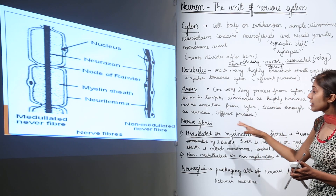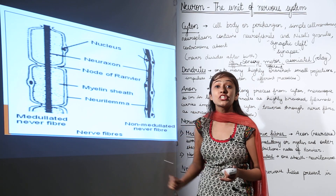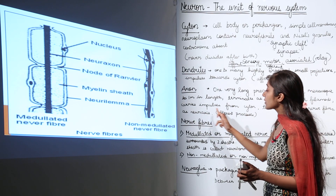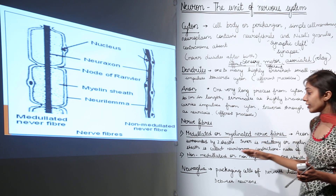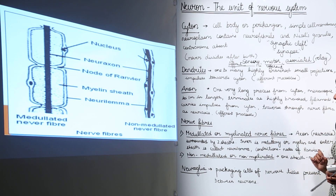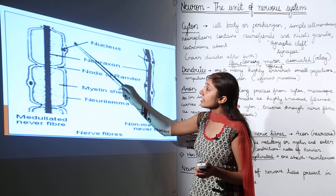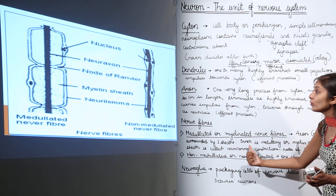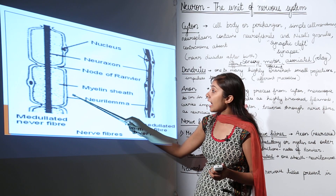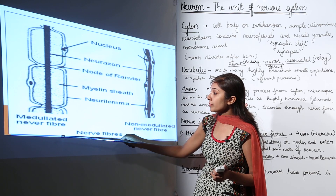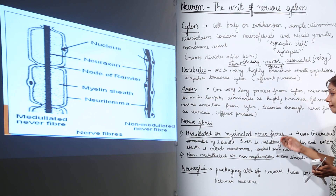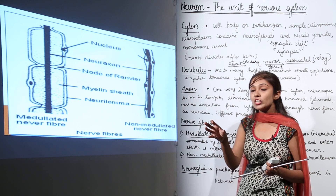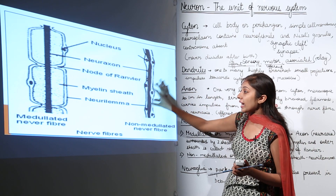Nerve fibers are divided into two categories based on the number of sheaths. Myelinated (medullated) nerve fibers have two sheaths: the inner sheath is the myelin (medullary) sheath, and the outer sheath is the neurilemma. Non-myelinated (non-medullated) nerve fibers have only one sheath — the neurilemma — and the myelin sheath is absent.